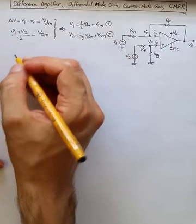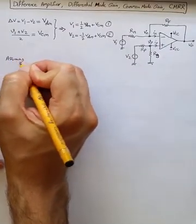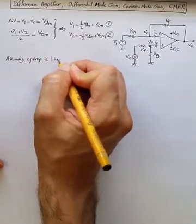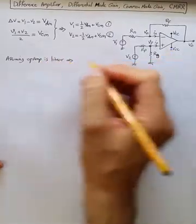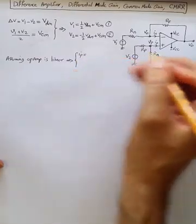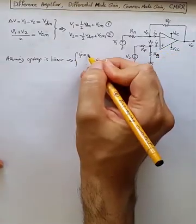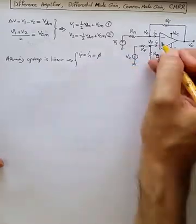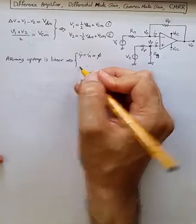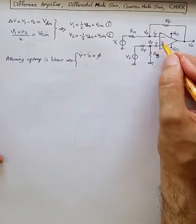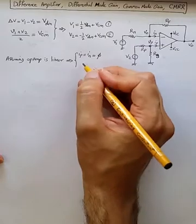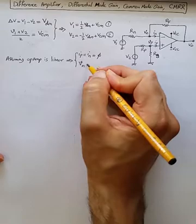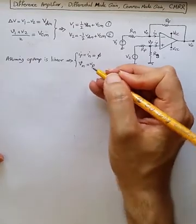Now, assuming op-amp is in linear region of operation and it's an ideal op-amp, we can say no current is flowing into or out of the input terminals. We can also say there is a virtual short between the two input terminals given the negative feedback, so V negative terminal equals V positive terminal.